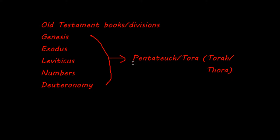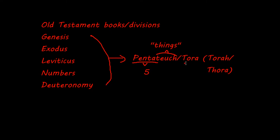As for the meaning of Pentateuch and Torah: Pentateuch comes from the Greek word for five, and 'teuch' means something like 'things,' so it's the five things. The word Torah means law, but it can also be understood as instruction.